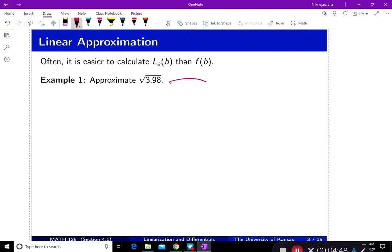From grade school, you know that you go to a nicer value that you can take the square root, and then you use that to approximate. So what's a nicer value? Square root of 4.